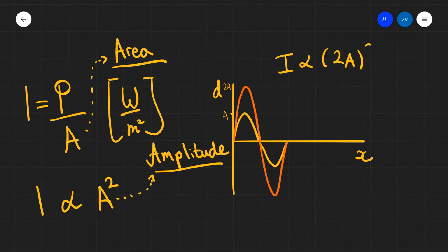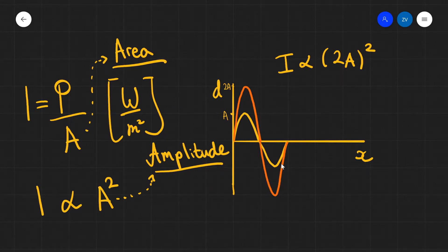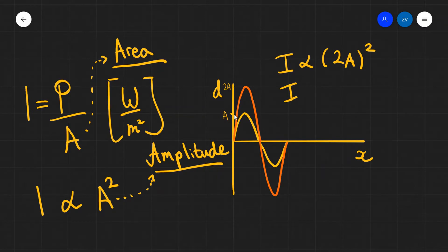So intensity will be proportional to 2A squared. This means that we will be getting a factor of 4, which means that the intensity of this wave with the large amplitude will actually be proportional to 4A².